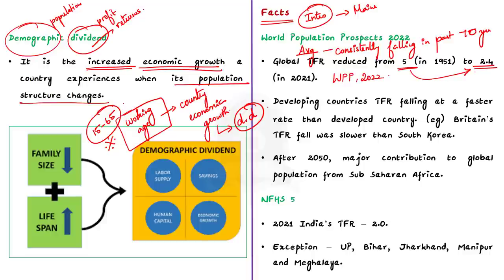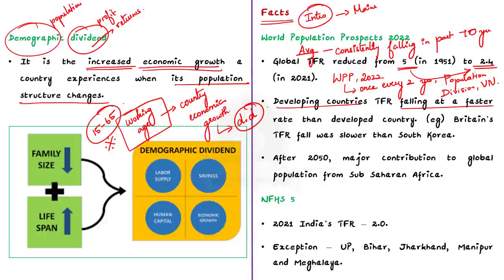World Population Prospects is released once every two years by the Population Division of the United Nations. The second useful fact is that developing countries and newly developed countries are reducing their TFR at a faster rate than older developed countries.